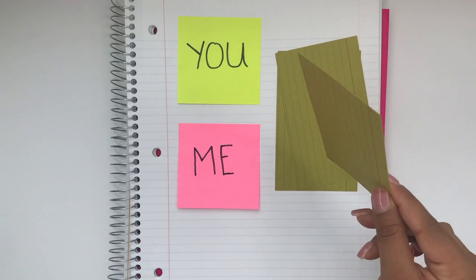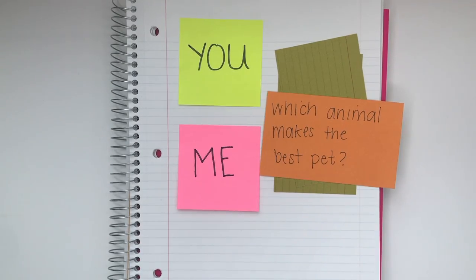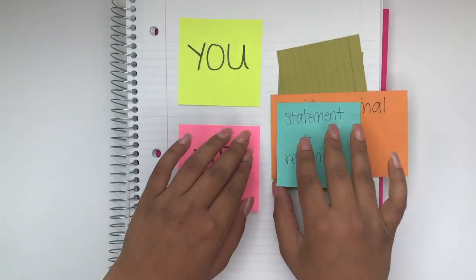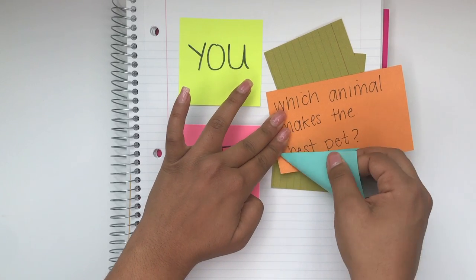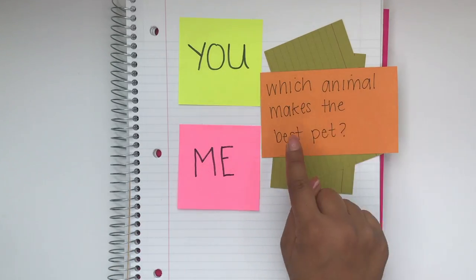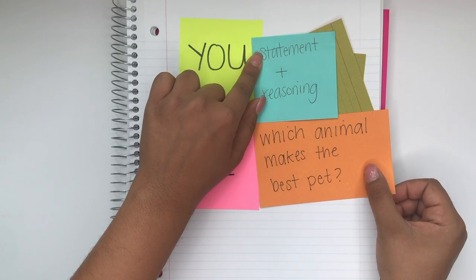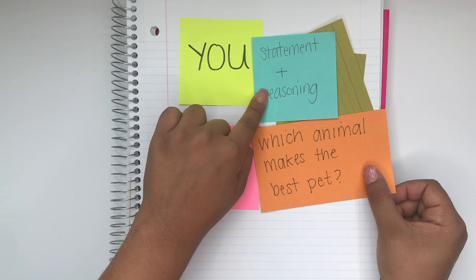The students will turn over one of the cards, or you will show the debate topic on the board. Give students a moment to think, and then they will decide which of them will start the debate with a statement plus reasoning to support the topic. For example, if the debate topic is which animal makes the best pet, you start by saying: dogs are the best pets because they're known to be very loyal, and loyalty is important in a friend.